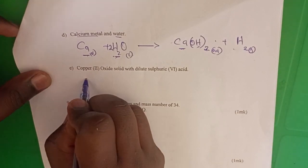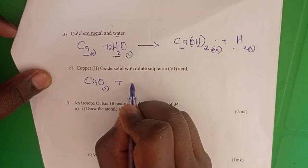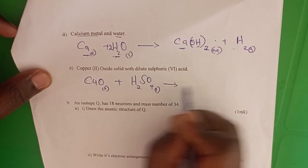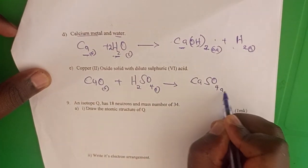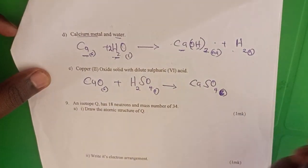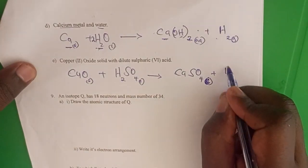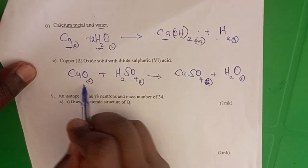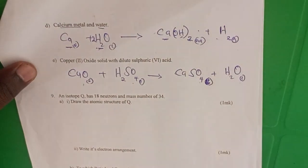Next: calcium oxide reacting with dilute sulfuric acid to form calcium sulfate — this is a solid because calcium sulfate is insoluble — plus water. A metal oxide base plus an acid forms a salt plus water.